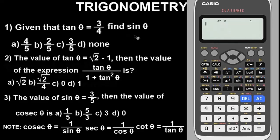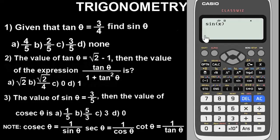Now we are asked to find sin theta. To find sin theta, just press Sin, then press Alpha X — remember theta is represented by X, which is the number we stored for tan inverse of 3 over 14. Press the equals button and see the answer: 2 over 5. So the answer to question 1 is option C. Very simple — it's as simple as that.